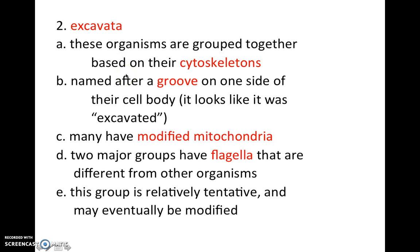Let's get started with Excavata. These organisms are grouped based on the properties of their cytoskeletons. Cytoskeletons are a network of proteins that compose the cell wall and membrane. The cytoskeleton is unique in Excavates because on one side there is a groove — it looks like it's been excavated, like digging. There honestly looks like a spot in the cytoskeleton that has been dug away. Excavates also have modified mitochondria, and two major groups have flagella that are different from other organisms.